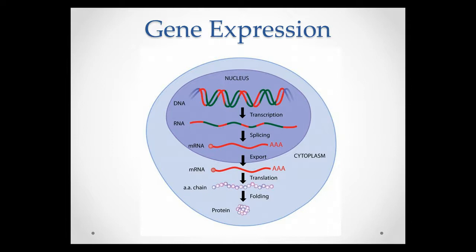When we talk about gene expression, essentially what we are talking about is making proteins. Every protein in our body — which there are tons of them with many functions, things like antibodies and hormones — every protein needs to have a gene that codes for it. Remember the genes are just a small segment of DNA. So when we talk about gene expression, basically that DNA code needs to go through several steps to make the protein — those steps are transcription and translation, essentially, with some other mid-level steps in there.